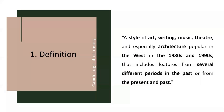We shall begin with the definition. According to the Cambridge Dictionary, postmodernism is a style of art, writing, music, theater, and especially architecture popular in the West in the 1980s and 1990s, that includes pictures from several different periods in the past or from the present and past.